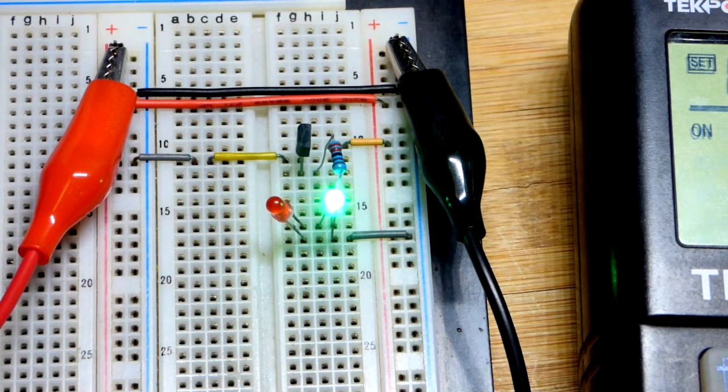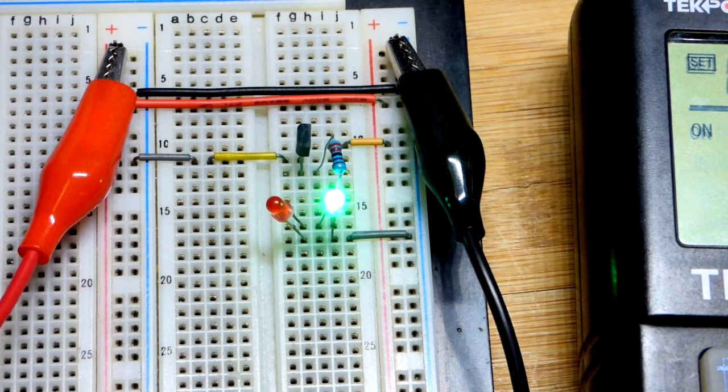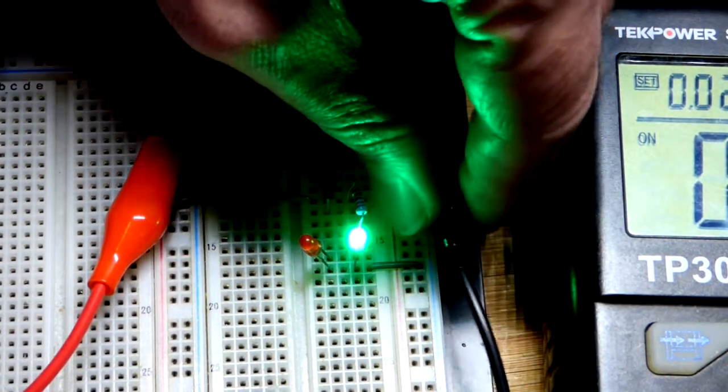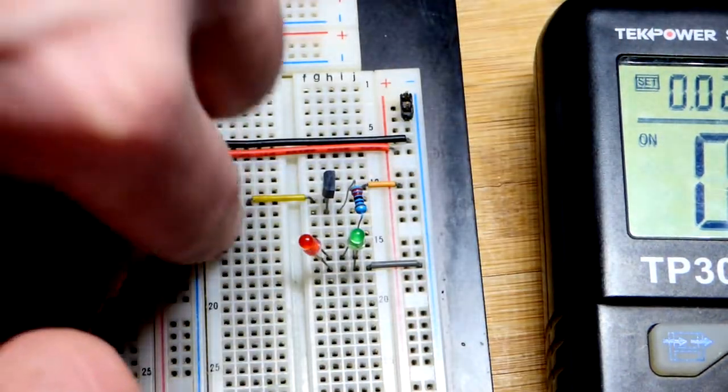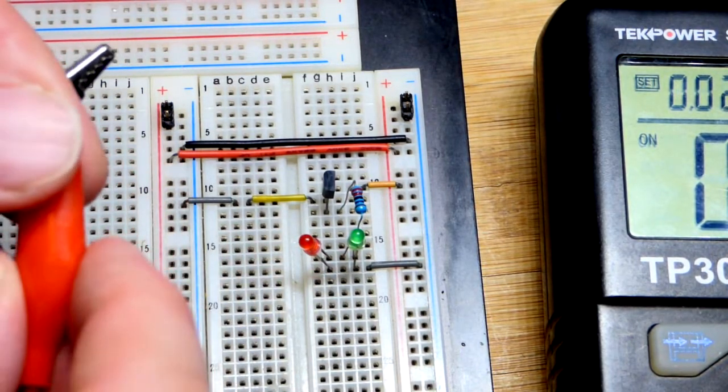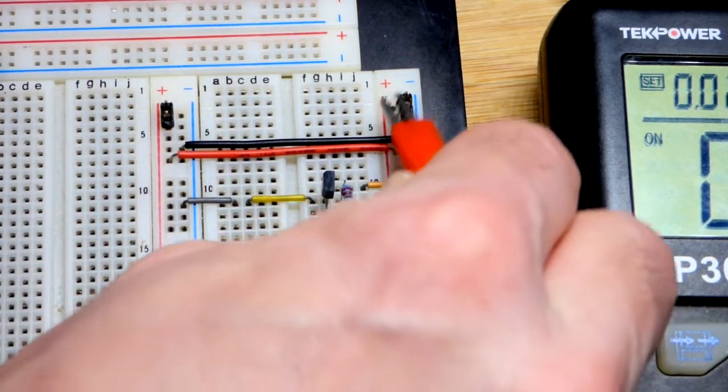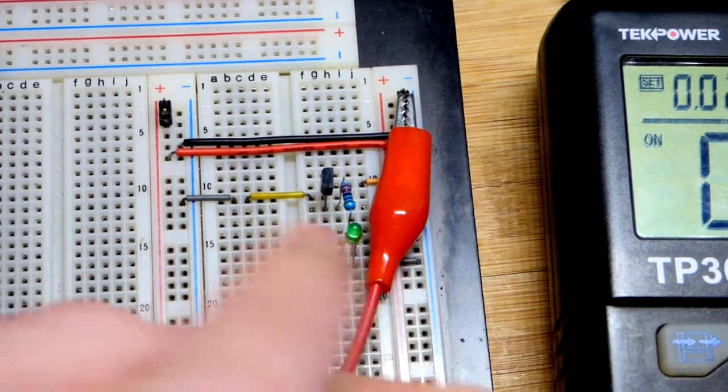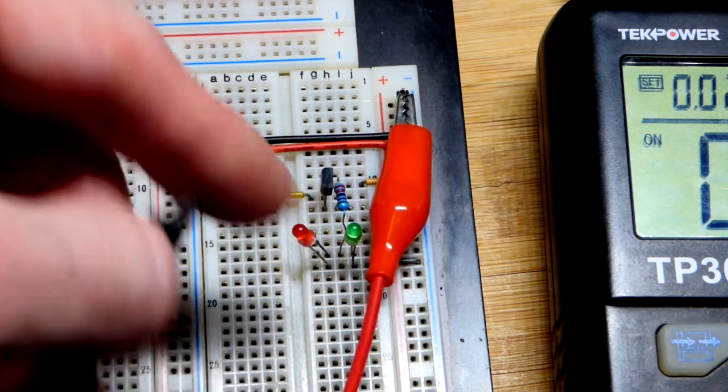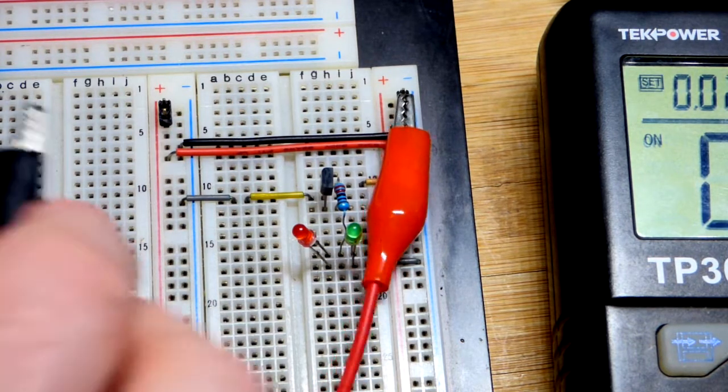We'll clip the jumper to the positive supply and the black jumper to the negative supply. Red jumper positive, black negative—that is correct. There you can see the green LED lights up. When the green LED lights up, we know things are good. If the red LED lights up, we know polarity is backwards.